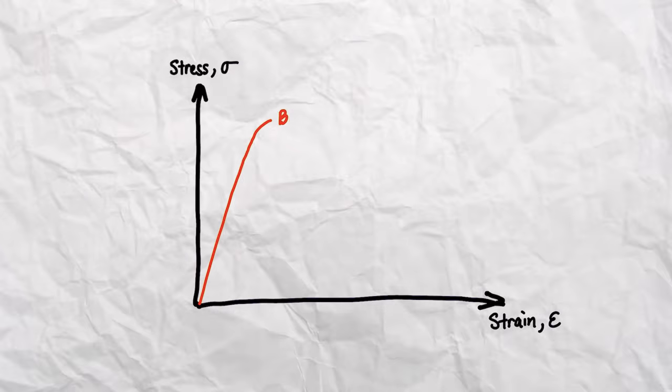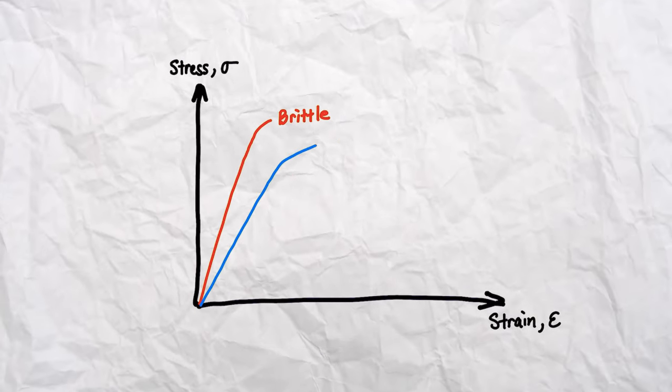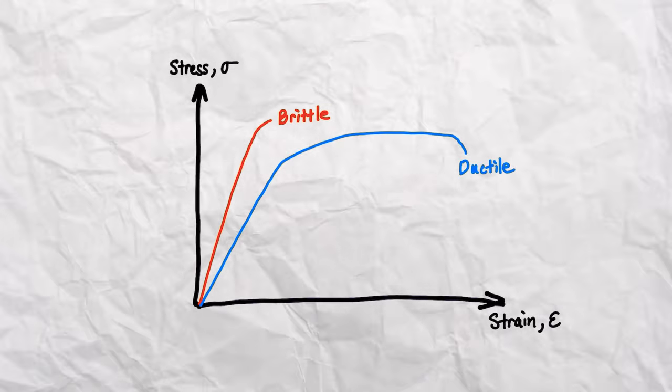The stress strain curve for brittle materials will look something like this, and for ductile materials, it'll look something like this. You should be familiar with the stress strain curve and what the elastic modulus is for common engineering metals and plastics, such as steel, aluminum, and polyethylene.